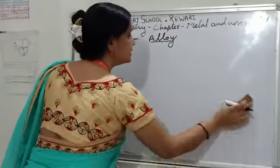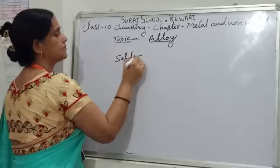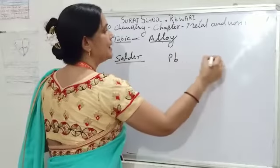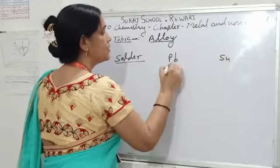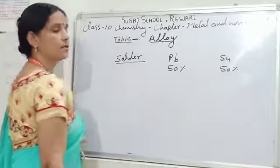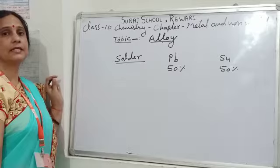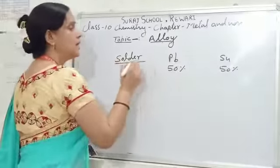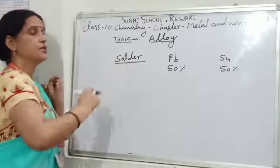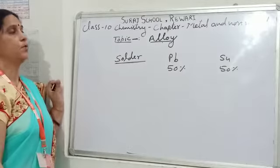Another alloy is solder. It is the alloy of lead and tin in the ratio of 50-50%. If we mix lead and tin in the ratio of 50-50%, we get solder alloy. Solder has a very low melting point, that's why it is used to weld electrical wires and electrical components.